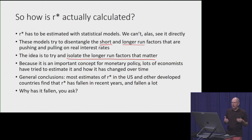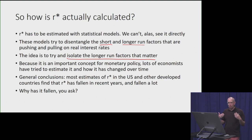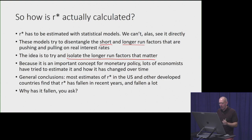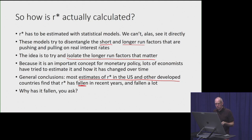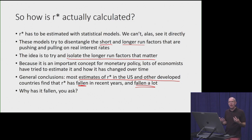R-star is a pretty important concept in macro and monetary economics, so a lot of economists have taken a go at it, giving us a large body of literature. There is variation in the outcomes, but almost all of the estimates suggest that in the United States and other developed countries, r-star has fallen — and not by just a little bit, but by a lot. So now we want to evaluate what factors are on net working to push down r-star.